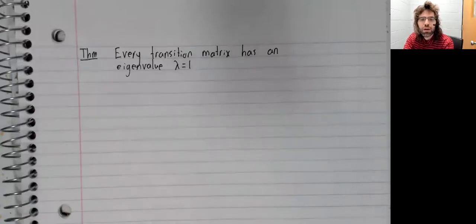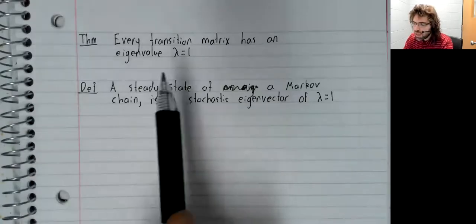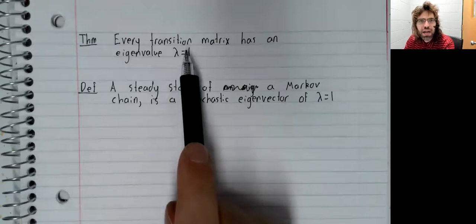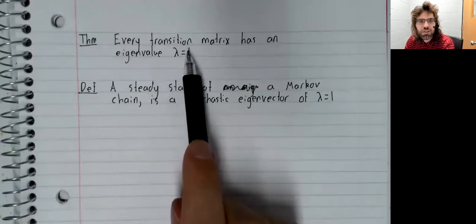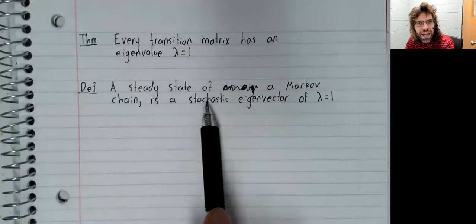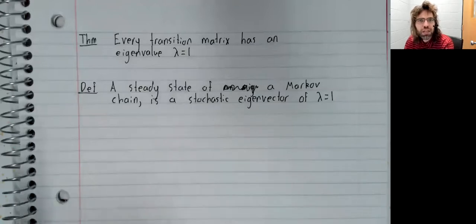Now a definition. This eigenvalue has infinitely many eigenvectors associated with it. If one of those eigenvectors is stochastic, it is called a steady state of the Markov chain.